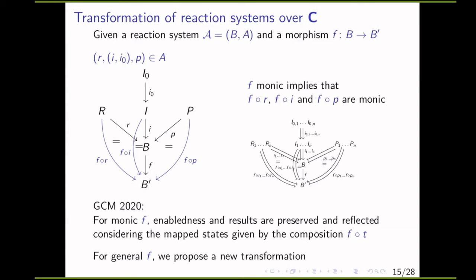Now consider transformations of reaction systems over category C. Given a reaction system A with background object B and a morphism F from B to B prime, one can compose the reactants, the first part of the inhibitor, and the product with F yielding composed morphisms. If F is monic, then the composed morphisms are also monomorphisms. At last year's GCM, we showed that enabledness and results are preserved and reflected, considering the mapped states given by composition with F.